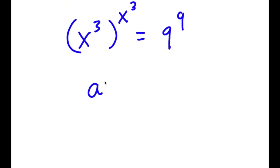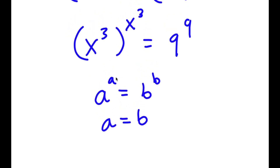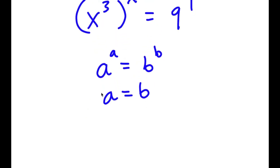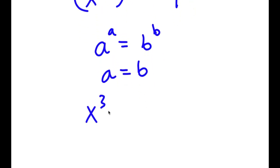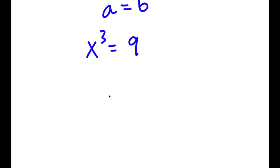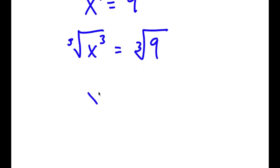Now if a to the power of a equals b to the power of b, this means a equals b. So x to the power of 3 is equal to 9. Taking the cube root on both sides, the cube root of x to the power of 3 equals the cube root of 9, so x is equal to the cube root of 9.